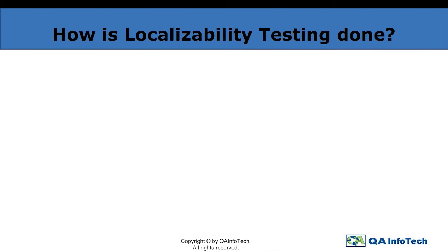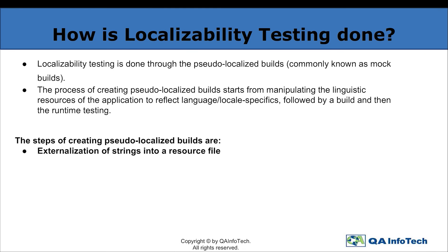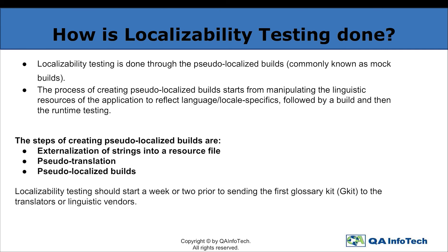Now we come to understanding how localizability testing is done, wherein mock builds are used to manipulate the linguistic resources of an application to reflect language or locale specifics, followed by a build and then runtime testing. These pseudo-localized builds are created by externalization of strings into a resource file, wherein the developer separates code from the translatable content. The strings separated from the code are then externalized into resource files. This is followed by pseudo-translation, wherein resources are modified by adding leading or trailing mock characters of the target language to reflect locale-specific characteristics. Finally, pseudo-localized builds are created using pseudo-localized strings for each language or locale, and these builds are made available early in the development cycle before sending out strings for translation to the linguist.